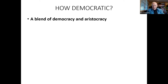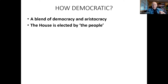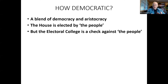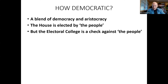A notable feature about the new government was the House of Representatives — that was the only body intended to be elected by the people, by eligible voters. The Electoral College was intended as a check against the people's will, created so that if the people elected a candidate the elite did not think worthy, the Electoral College would vote in another direction.